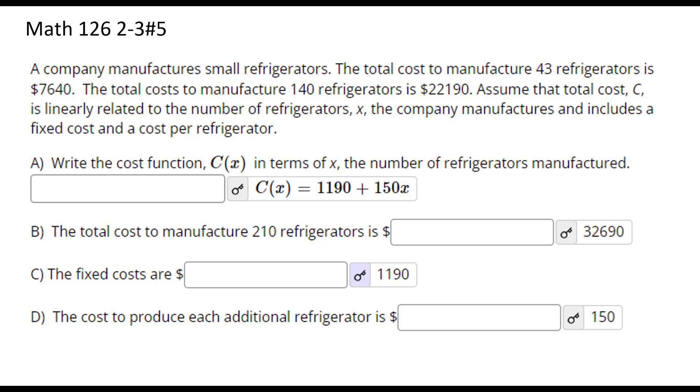This problem is from 2.3 number 5 in Math 126. A company manufactures small refrigerators. The total cost to manufacture 43 refrigerators is $7640. So we know 43 as an input results in the cost of $7640 as an output.